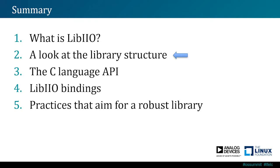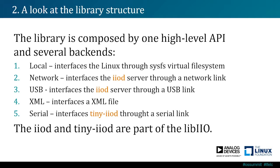Now let's have a look at how the library is structured. The library is composed of one high-level API, which is the same across all platforms, and several backends. The first is the local backend, which interfaces Linux through the SysFS virtual filesystem — this is the backend used when LibIIO runs locally on target. Then there's the network backend, which interfaces the IIOd server through a network link.